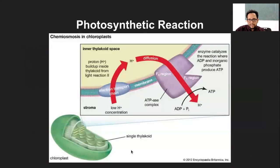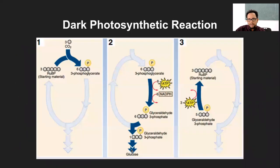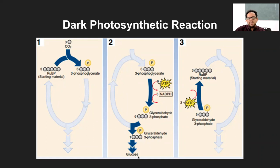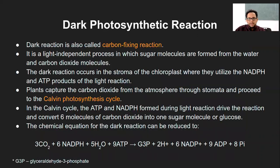After G3P is formed, it enters the Calvin cycle. It is synthesized from phosphoglycerate already present from the cyclic reaction process, enters this cycle, and forms glucose after several reactions. Because G3P is a three-carbon molecule, it adds another molecule of glyceraldehyde-3-phosphate and causes glucose formation. That's the simple reaction of G3P in the dark photosynthetic reaction.